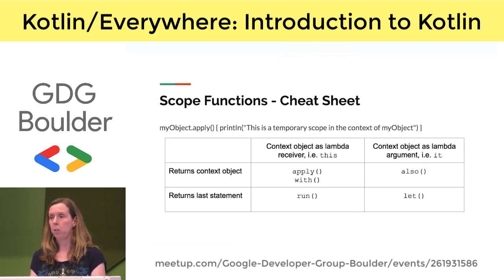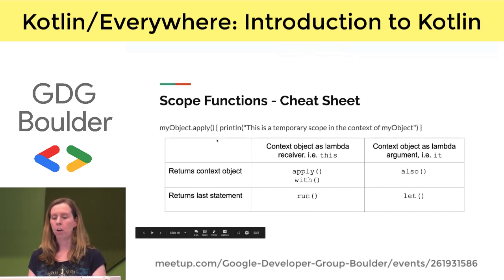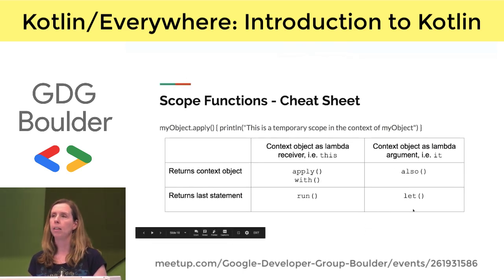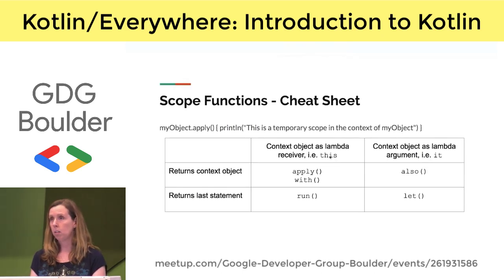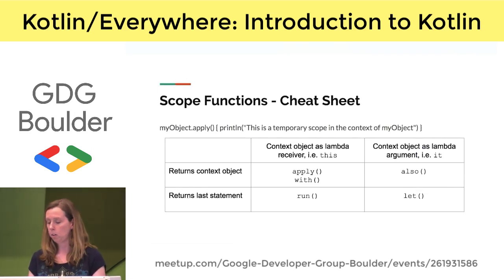Scope functions use lambdas and are probably the most foreign-looking part of Kotlin. Basically, scope functions are functions you execute on an object to create a temporary scope in the context of that object. There are five different functions with slightly different behavior. In some, the object inside the body is referred to as this, so you can access member variables and functions directly. In others, the object is it, like a lambda argument. Some return the context object itself at the end of the block, while others return the lambda result — the last statement of the block.